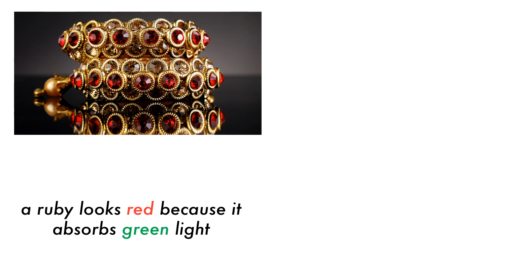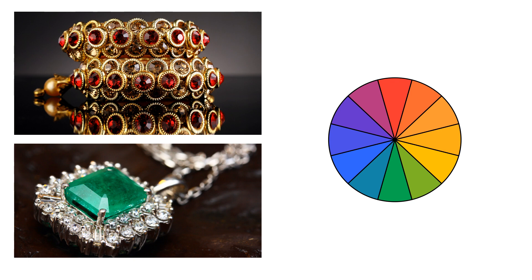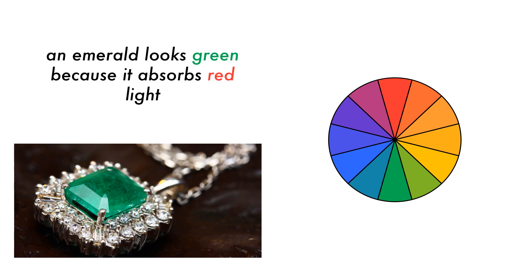A ruby appears red because when it is irradiated with light, it absorbs green light due to the arrangement of electrons in its molecular orbital diagram. A color wheel indicates that when a color of light is absorbed, the opposite color is observed. So in the case of a green compound, such as this emerald, it means that red light is being absorbed.